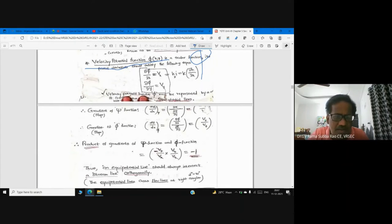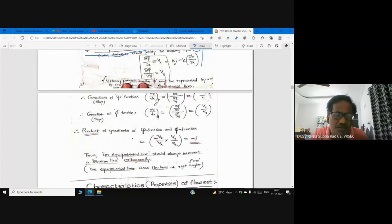Equipotential lines and stream lines are perpendicular to each other. We are finding the slope for psi function, the stream function. Finding the slope for phi function, the equipotential function. dy/dx - we understand gradient means slope, slope means y2 minus y1 by x2 minus x1. In differentiation we call it dy/dx. For psi function, the slope is minus Vy by Vx.